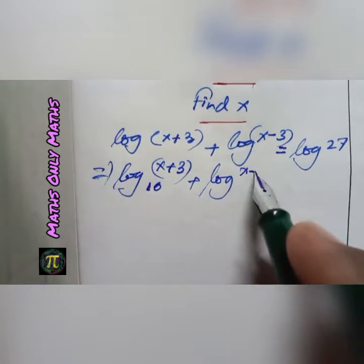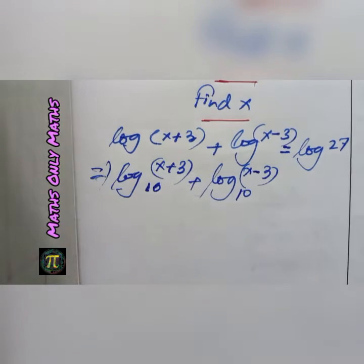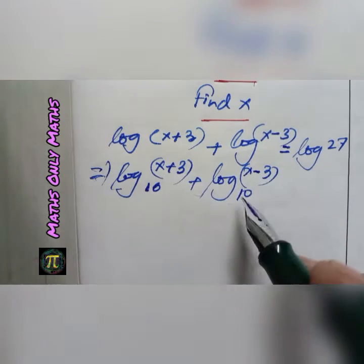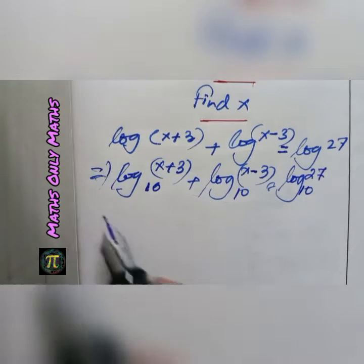So I get log(x+3) to the base 10 plus log(x-3) to the base 10 equals log 27 to the base 10.